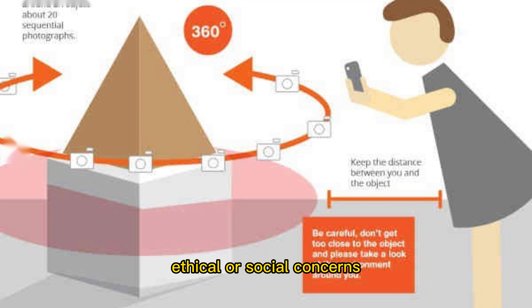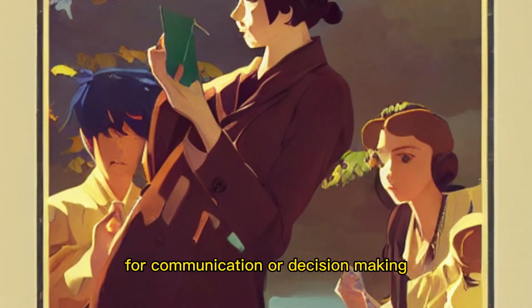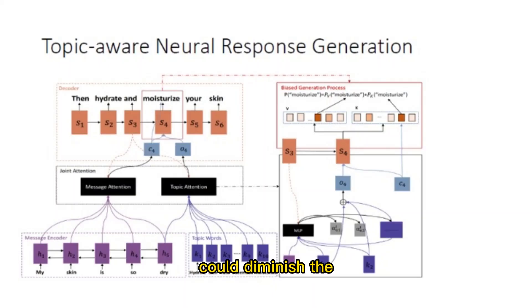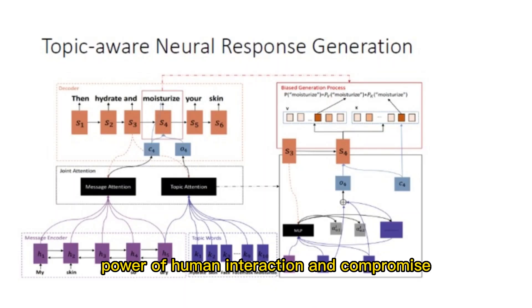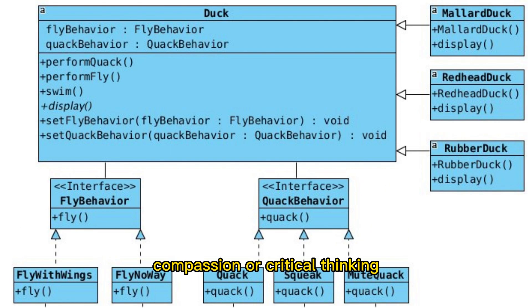Ethical or social concerns. Some may object to the idea of relying on AI models such as ChatGPT for communication or decision-making, arguing that this could diminish the power of human interaction and compromise important values such as empathy, compassion, or critical thinking.